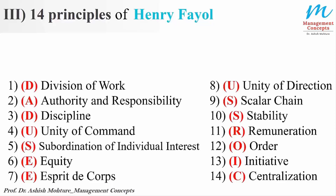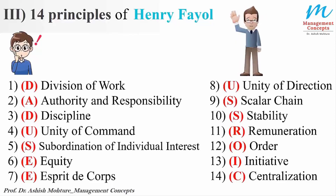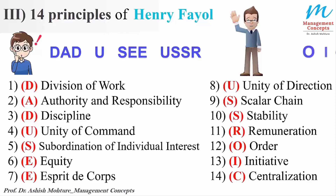The mnemonic is a story: a child asked his dad, 'Dad, you see USSR?' and the dad replied, 'O, I see.' The acronyms from this story — D, A, D, U, S, double E, U, S, S, R, O, I, C — represent the first letters of each of the 14 principles. For example, D stands for Division of work, A for Authority and responsibility, and so on. This is a helpful way to remember all 14 principles.